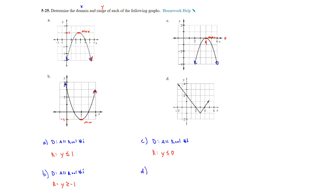On part d, we have a similar type of graph in terms of having a max or min, but it's a v-shape instead of a u-shape — this is an absolute value graph. The graph continues to go up and also left and right, so the domain is all real numbers. For the range, the smallest value is at negative 1, but it continues to go up, so the range is all values of y greater than or equal to negative 1. That covers four graphs for domain and range.